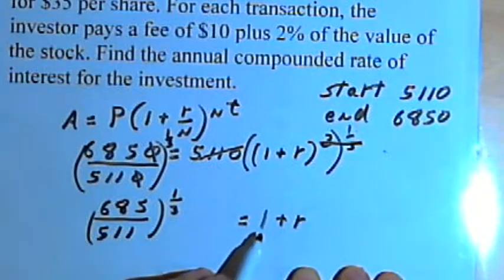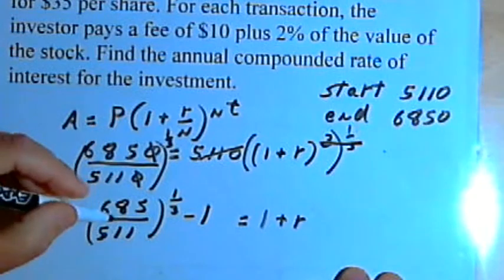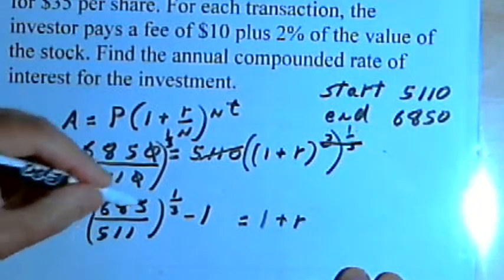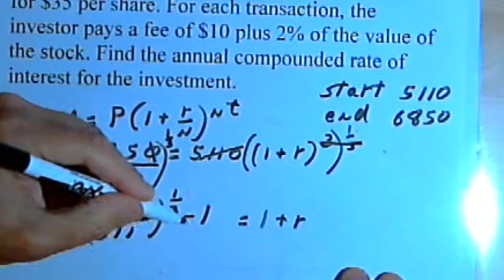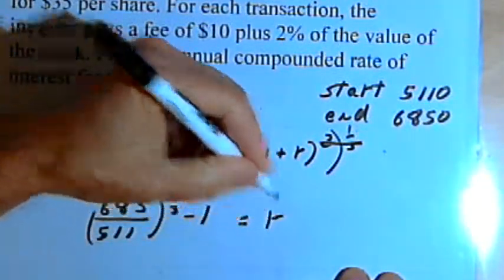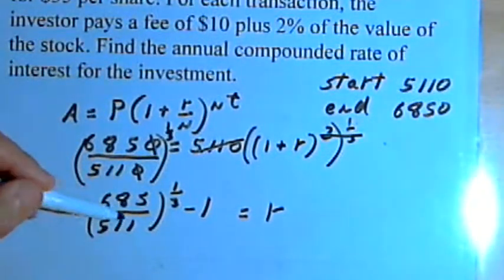Let's subtract 1 from both sides of the equation. So I'm going to have that fraction 685 over 511 raised to the one-third power minus 1, and the right side of the equation is just going to be r. So now all I have to do is use a calculator and find out what this equals.